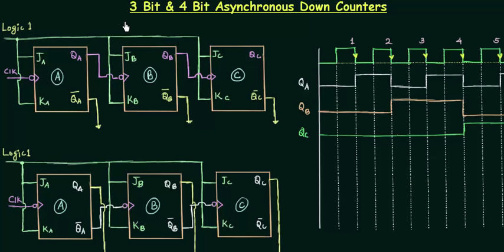We have already completed 3-bit and 4-bit asynchronous up counters. In this presentation I will teach you 3-bit and 4-bit asynchronous down counters. I have made two circuits here that will both give you a 3-bit asynchronous down counter. We are talking about asynchronous counters, so the clock is not given simultaneously to all three flip-flops. Since it is a down counter, it will start counting from 7 and end counting at 0.